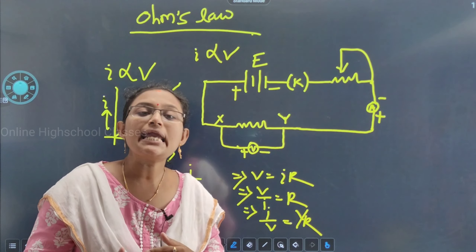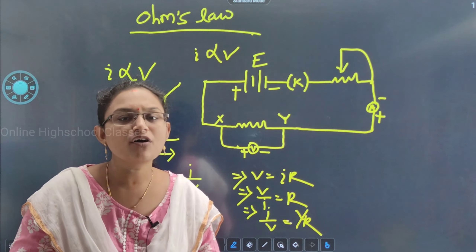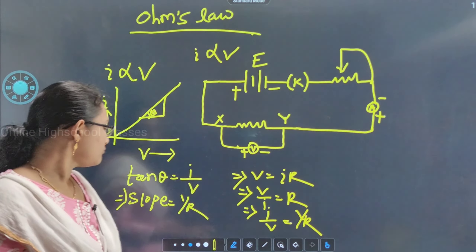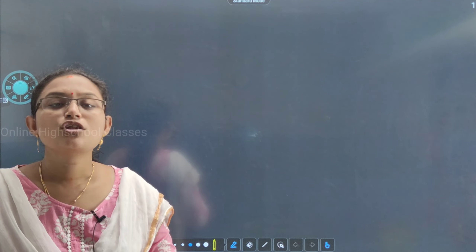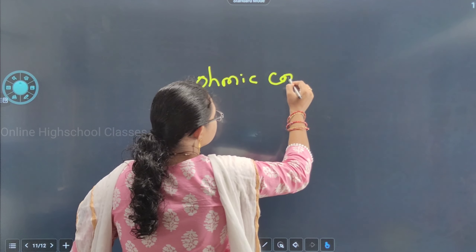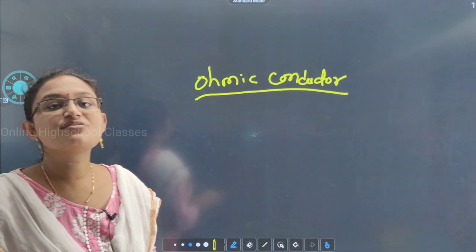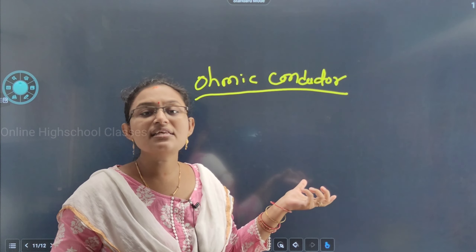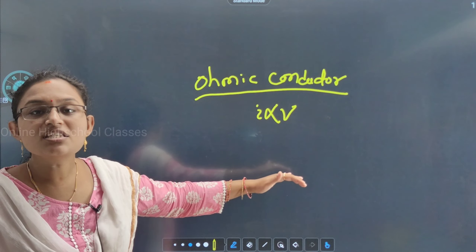We can see which materials satisfy Ohm's law — solids, liquids, gases, even vacuum tubes. An ohmic conductor is a conductor which obeys Ohm's law. That means for a conductor, if we obtain I directly proportional to V, then that conductor is an ohmic conductor.